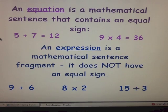An equation is a mathematical sentence that contains an equal sign. For example, 5 plus 7 equals 12, 9 times 4 equals 36. Those are equations because they have equal signs. You can remember equation has an equal sign because it sounds like equals at the beginning.